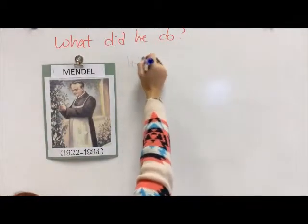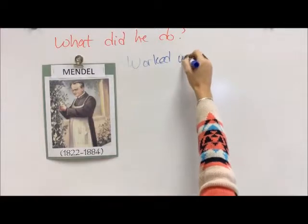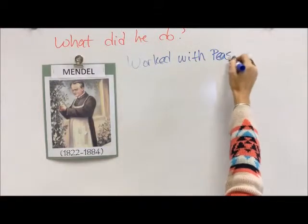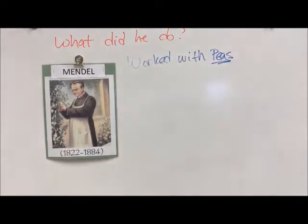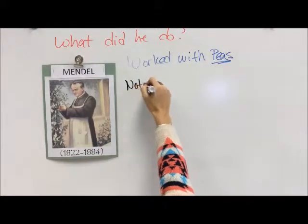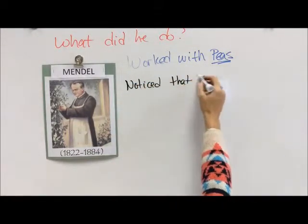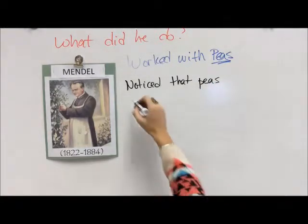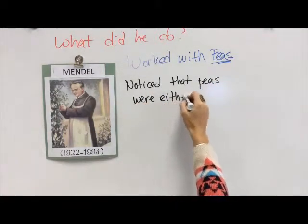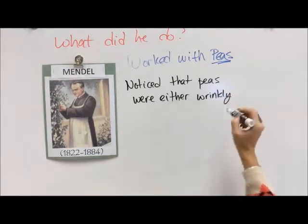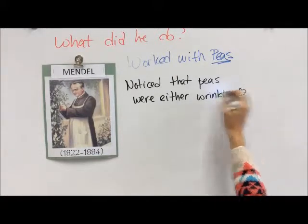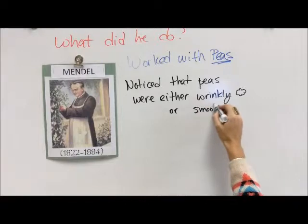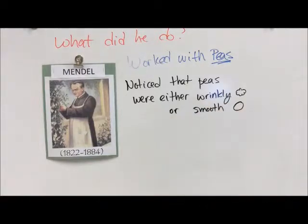So what did Mendel do exactly? Well, as a gardener he started to work with plants, and the plant that really caught his attention was the pea. He started to notice some things with peas. Most of the peas we think about today are round and green, but back in the day it wasn't like that. His peas were either wrinkly or smooth.